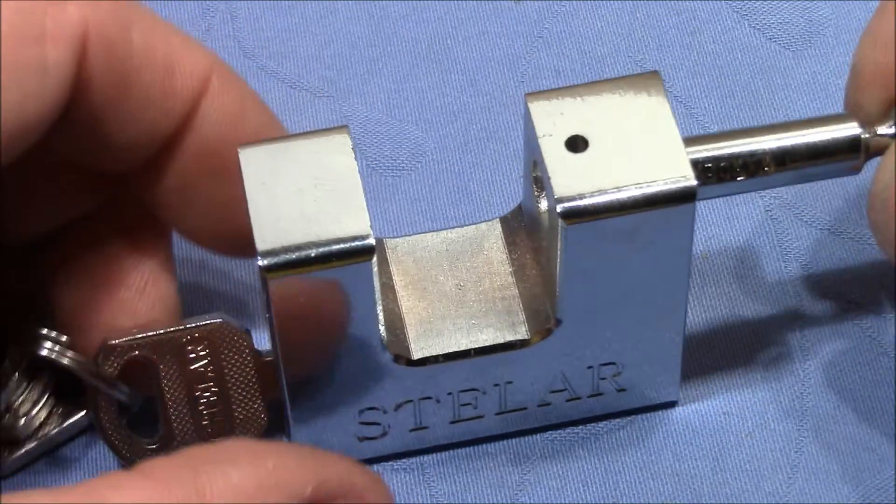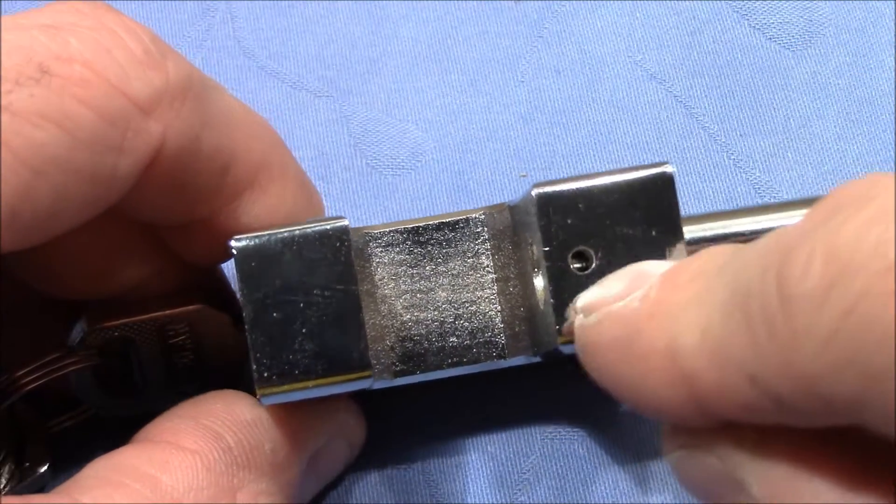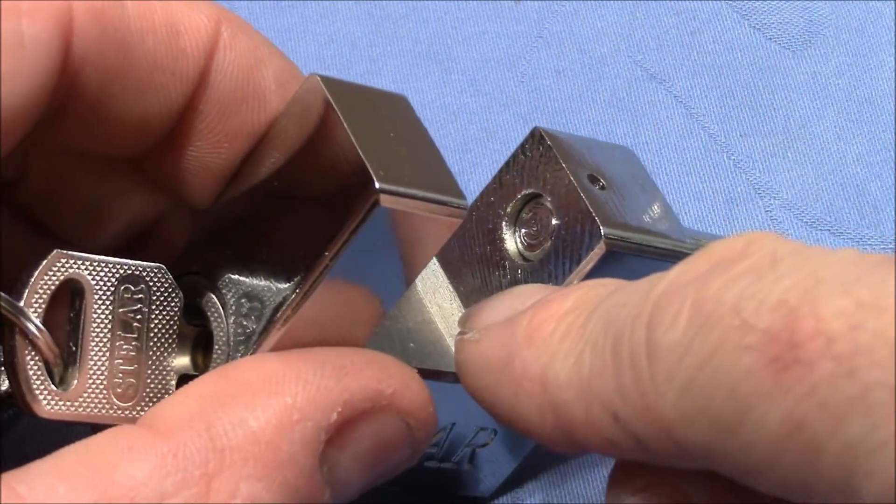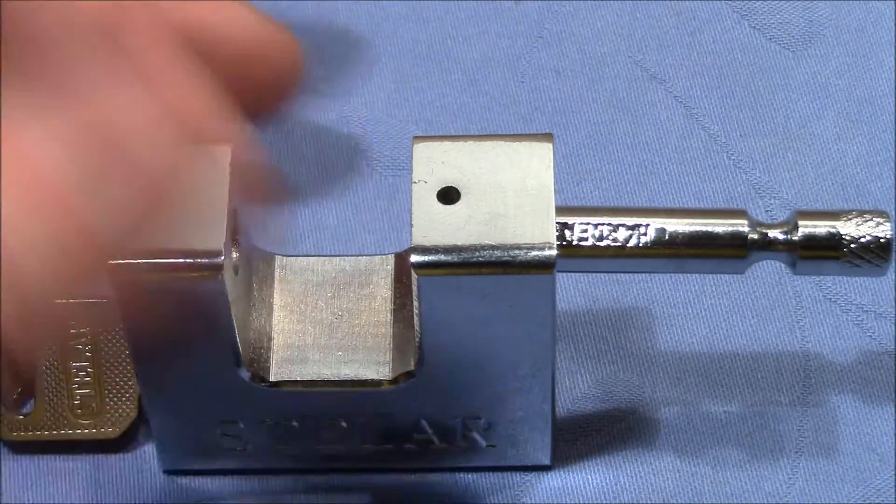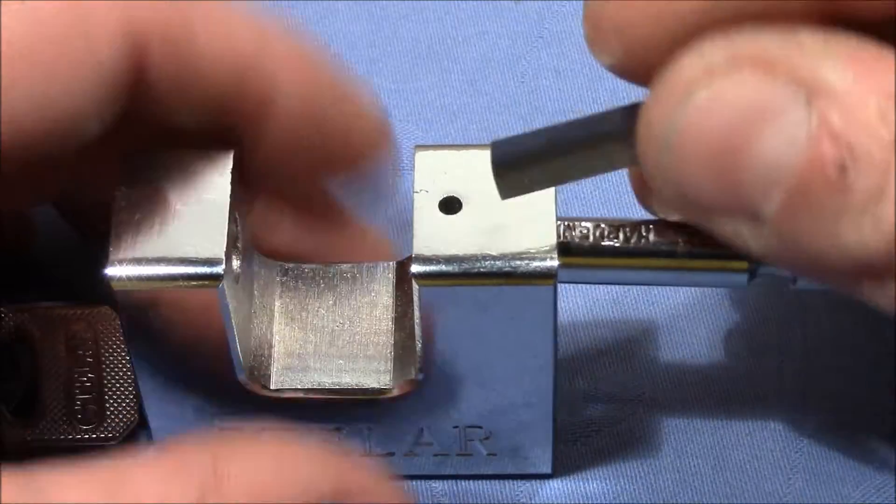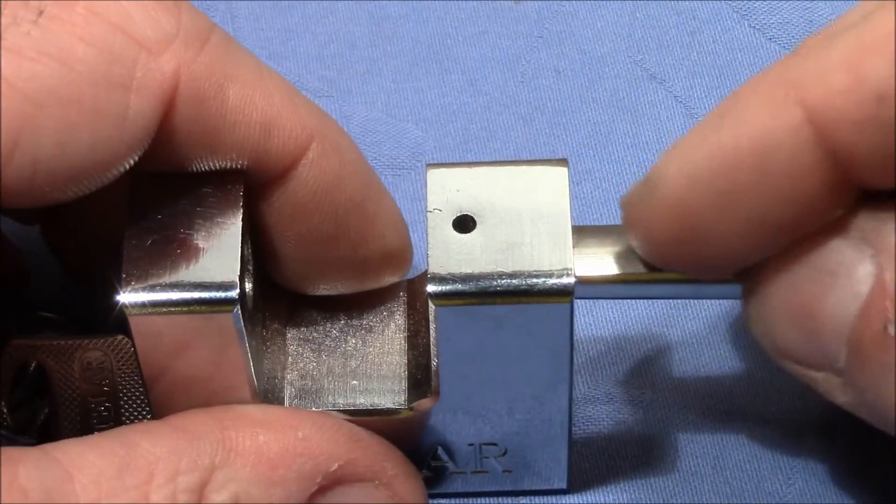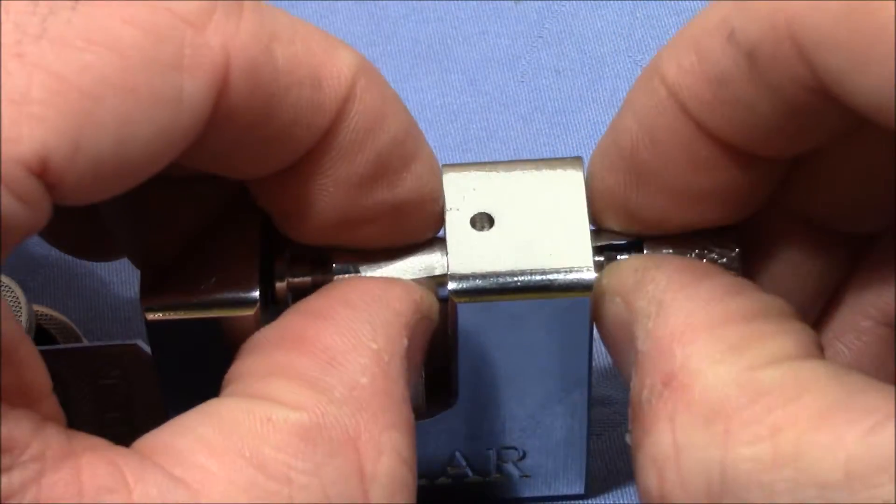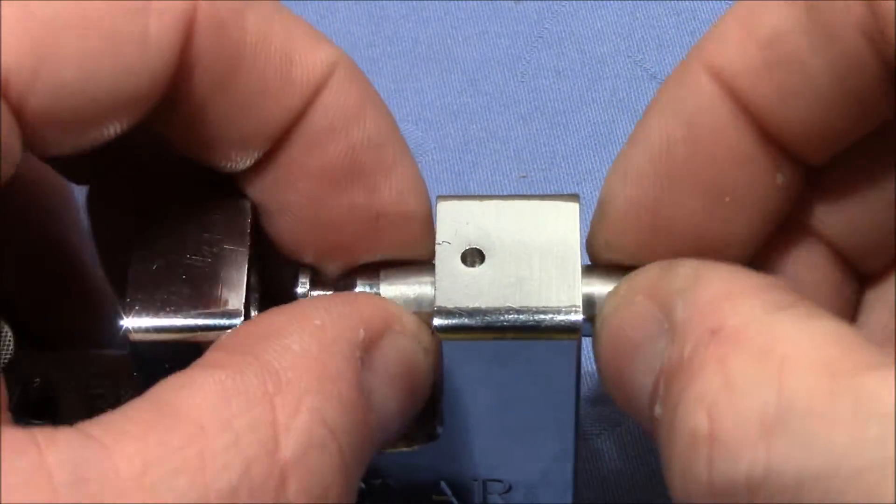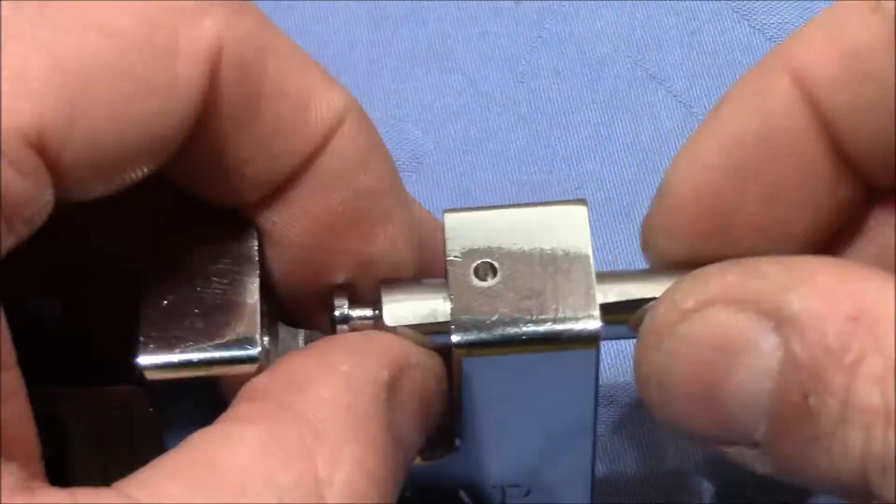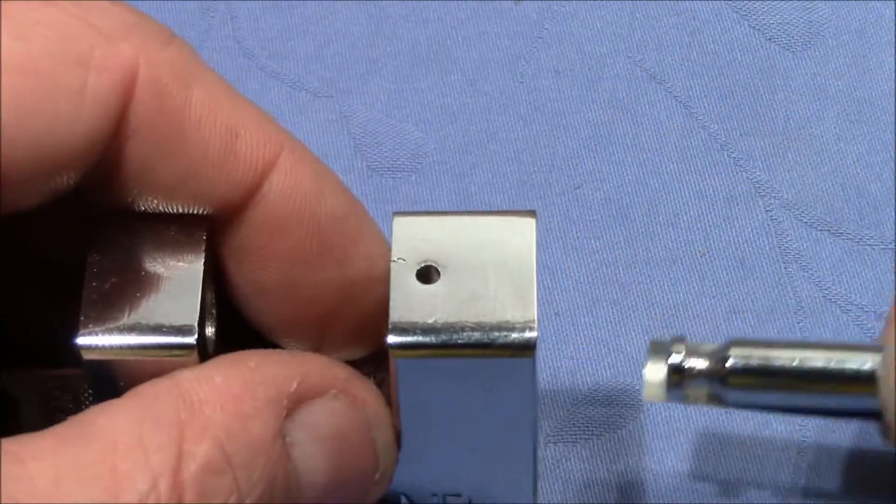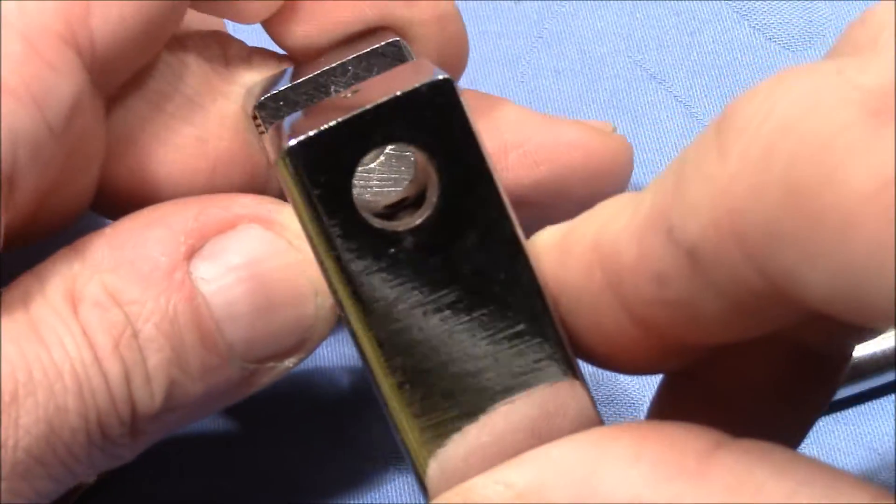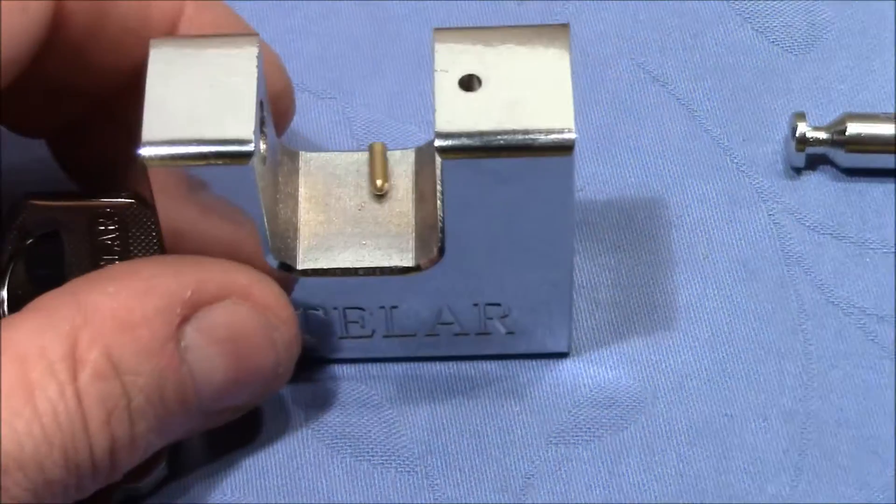You can see the shackle here stops and there's something inside. This hole here indicates that. I know there's a pin because I've opened it before, and we can open it by using a shim. So I put the shim inside here and then try to turn it around. Now it's off.